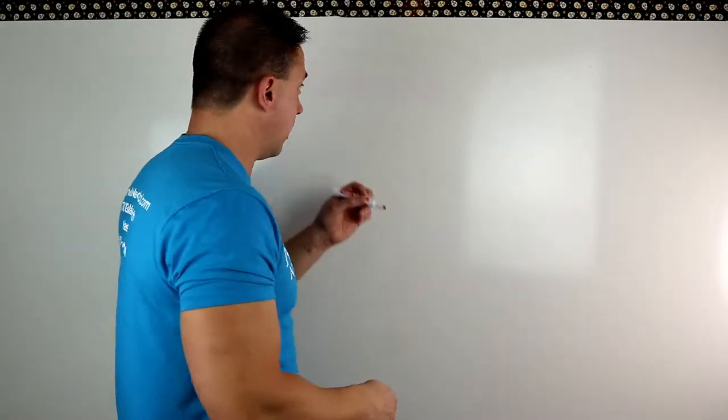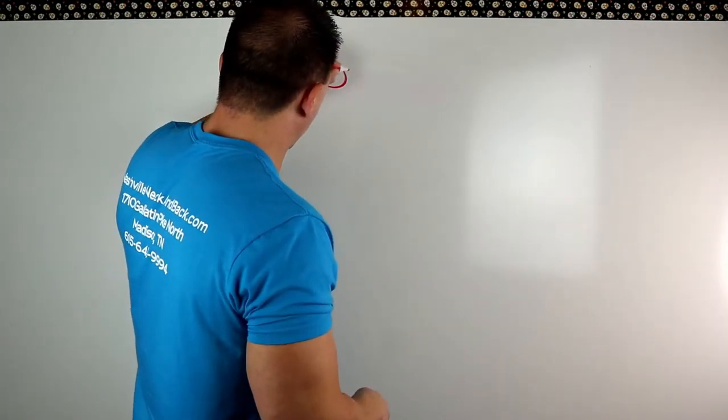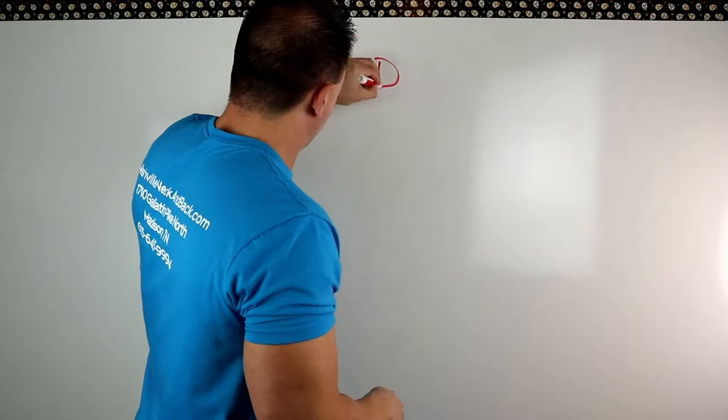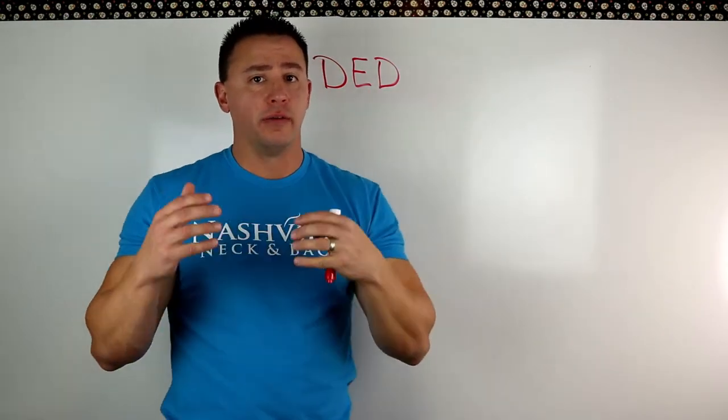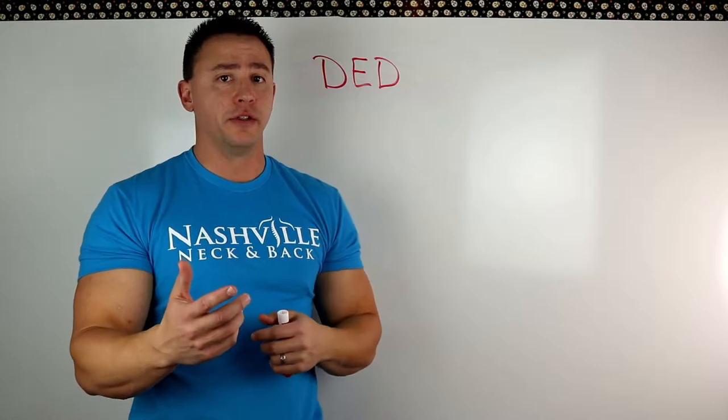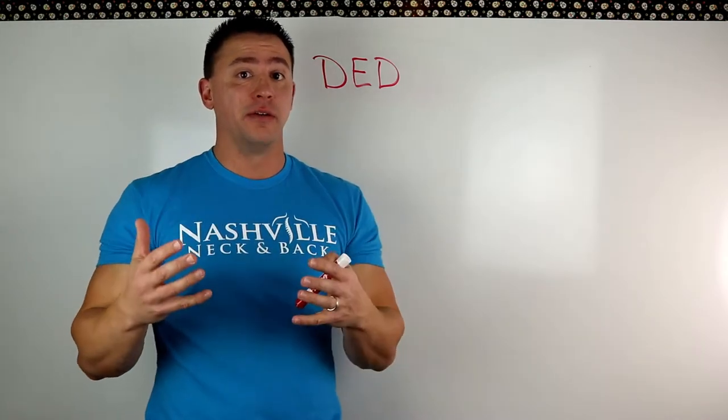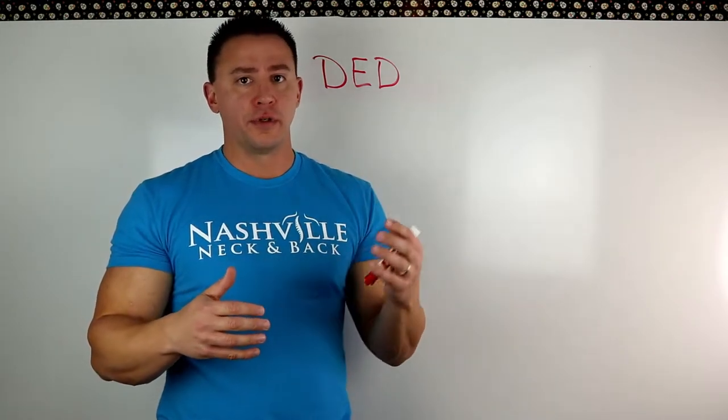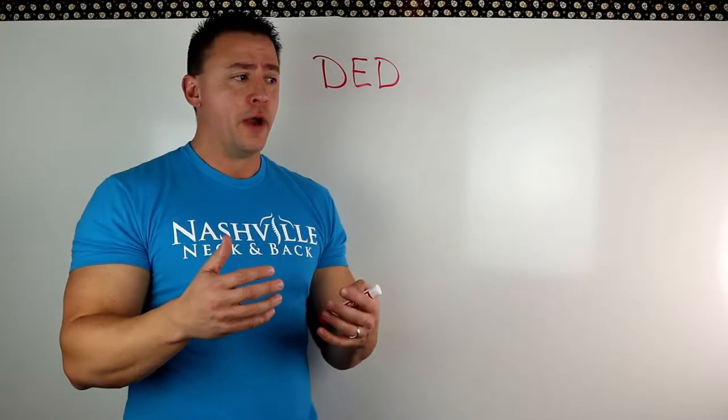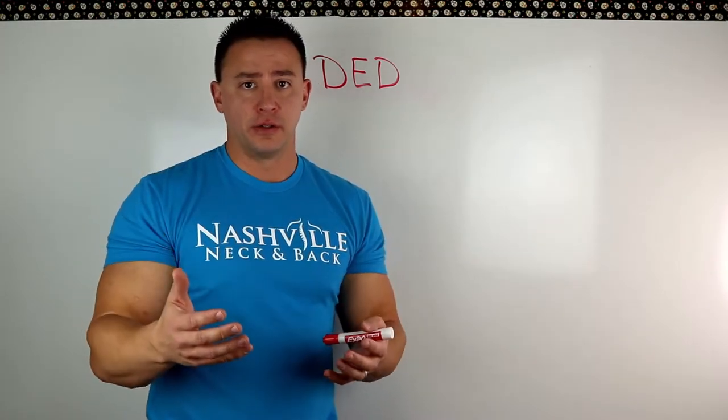So the first thing that we're going to start with is the deductible. And I'm going to abbreviate that DED up here at the very top. Now, your deductible is set by whatever insurance company you have and the plan that you pick. And as insurances continue to get worse over time, unfortunately, deductibles are rising. So let's just pick a number. Say your deductible is $3,000.